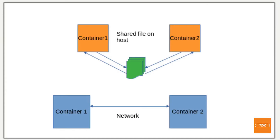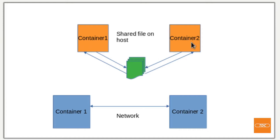Before we get into the demo, let's talk about how Docker containers typically communicate with each other. One way is by simply having a shared directory on the host — some sort of shared folder that both containers can access. Container one would post files or logs into that directory and container two can pick them up, or vice versa. So in this case, it would be communication through a shared file on the host.